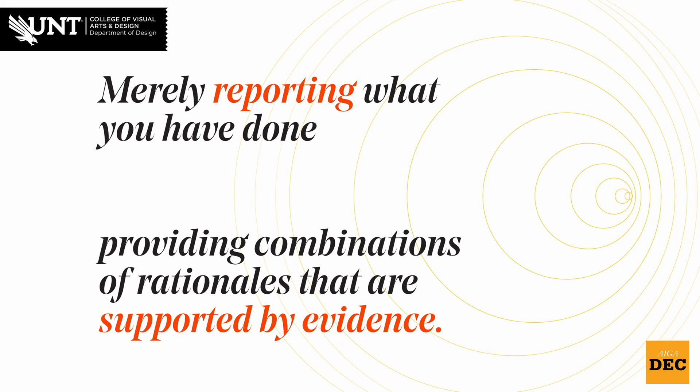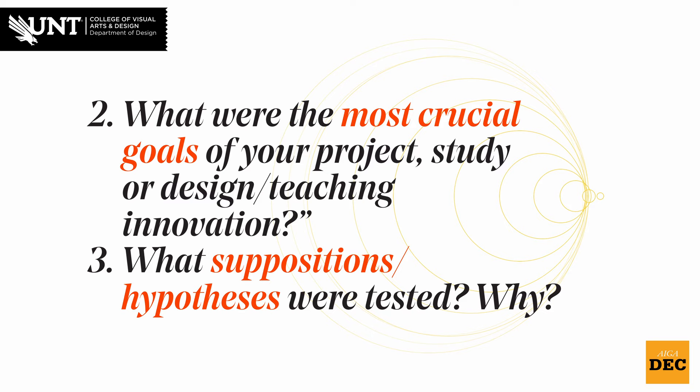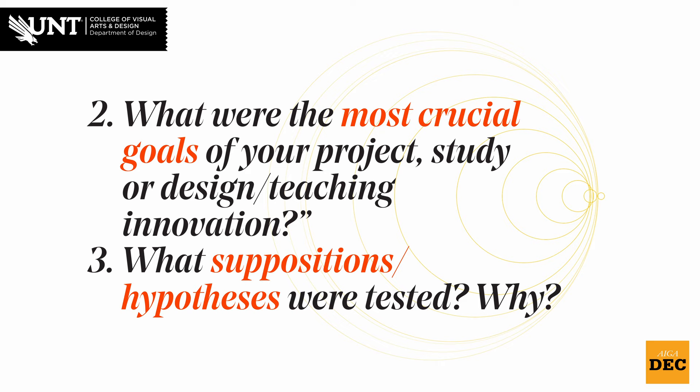With regard to both of the problematic types of writing described above, the lack of effective contextualization usually means that some crucial questions that should have been defined and addressed prior to attempting either the novel teaching approach, methodology or method, or the research project were ignored or simply not conceived. These include the following three questions. First, was the teaching innovation or research project informed by a specific extant approach and methodology, and if so, which ones and why? Second, what were the objectives and goals — not the same things — of the teaching innovation or research project? And finally, what suppositions or hypotheses were tested during the operation of the teaching innovation or the research project, and why these in particular?